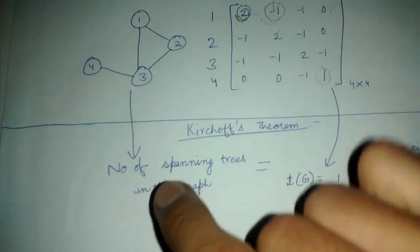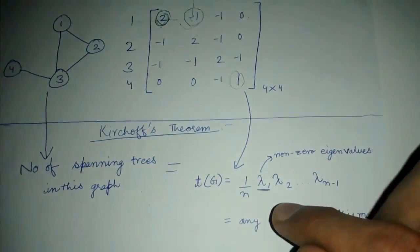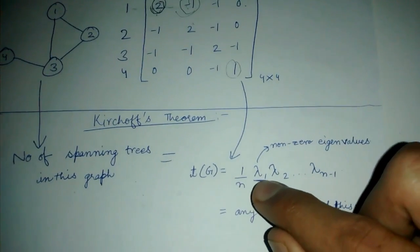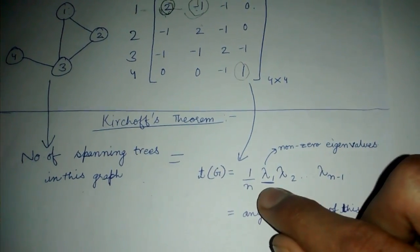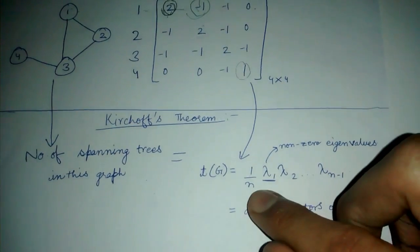So if we want to count the total number of spanning trees in this graph, we can do it by calculating the Laplacian matrix and then we find all the nonzero eigenvalues for it, call them lambda 1 up to lambda n minus 1, and multiply them and divide by n. Also any of the cofactor of this matrix will be equal to this value.